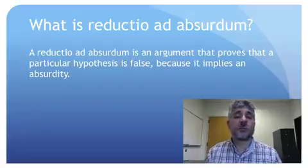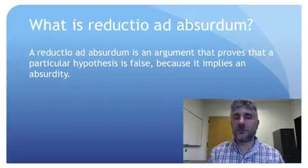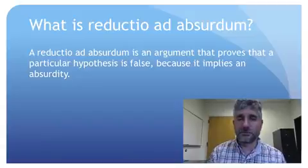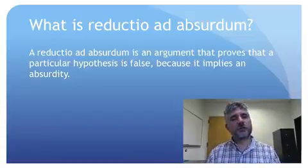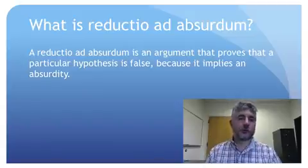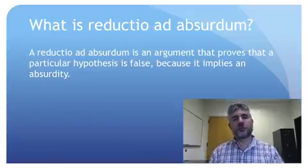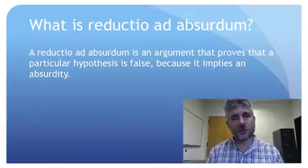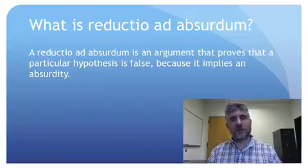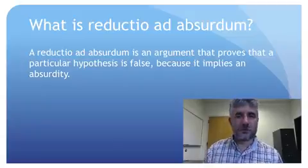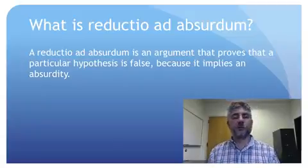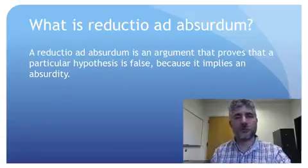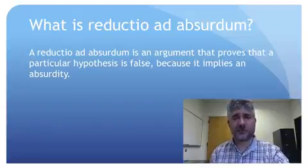Only something that's false can imply something that's obviously false. So if you do a reductio ad absurdum on a proposition, you show that the proposition is false, and if that proposition is one of the premises or the conclusion of an argument, then you've refuted that argument — you've shown that that argument is unsuccessful.